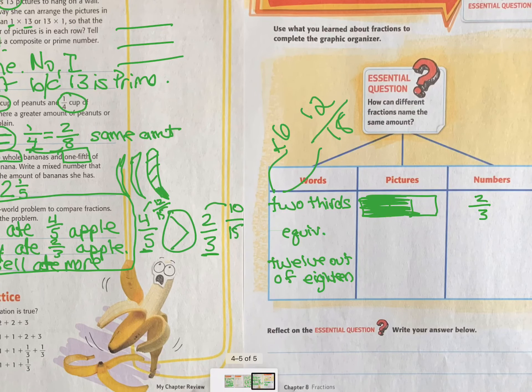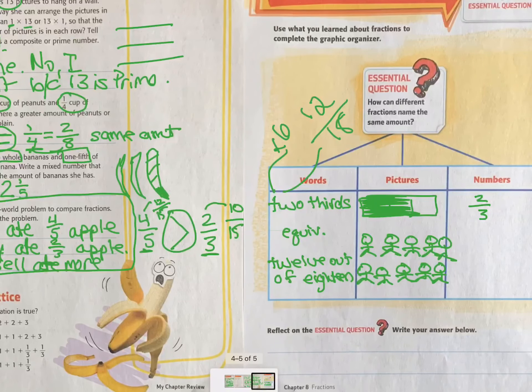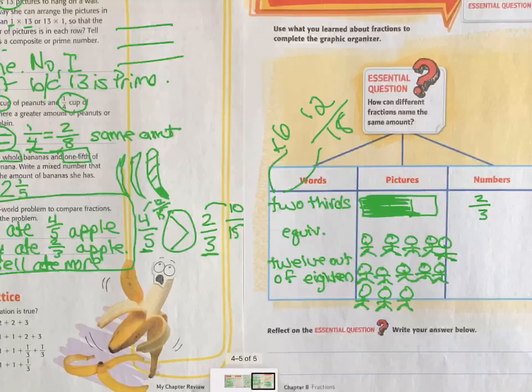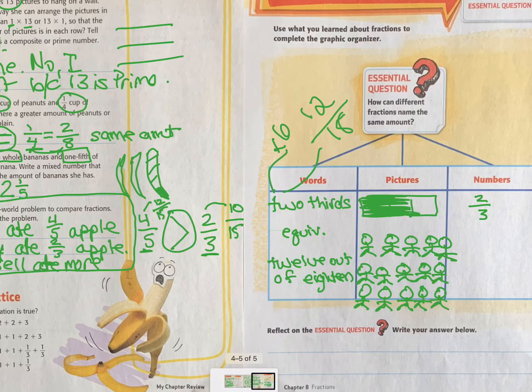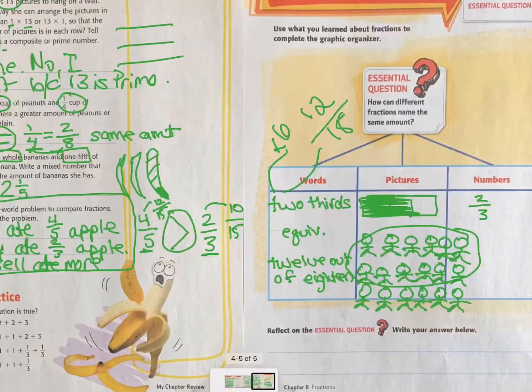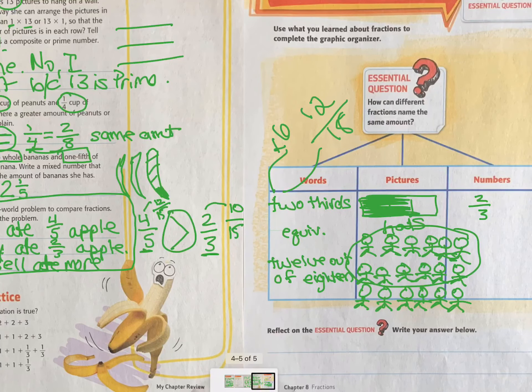So then I would do 12 out of 18. So words. And then I would write. Maybe it's. I've got 2, 4, 6, 8, 10 people. 2, 4, 5. And then make it. So 12 of these people have on hats. They don't. And I'm not going to draw that. Don't make me. And out of the 18 total. So that's a picture of 12 out of 18. And then I would just write 12 out of 18. And then to reflect,